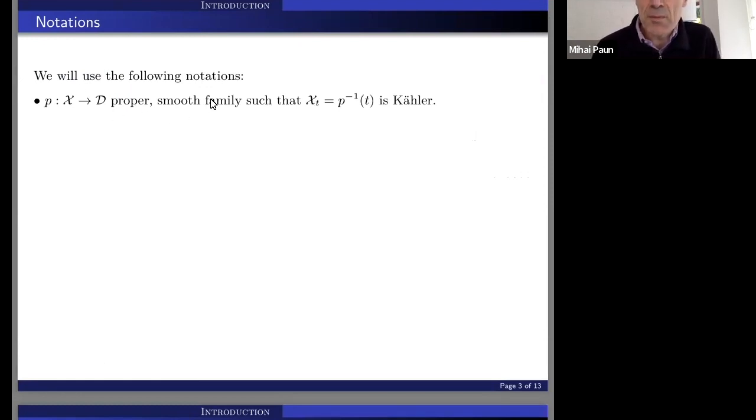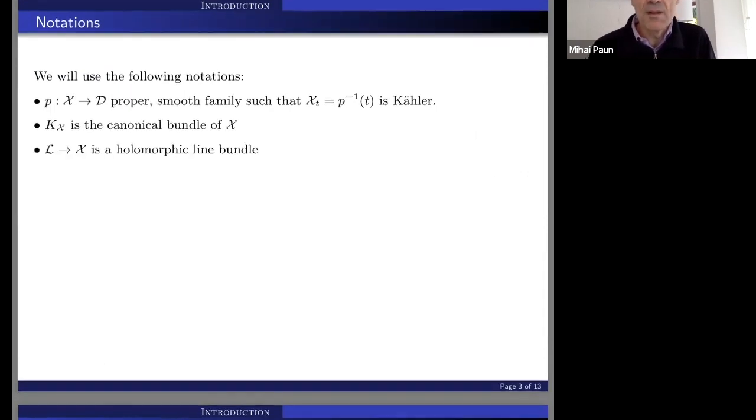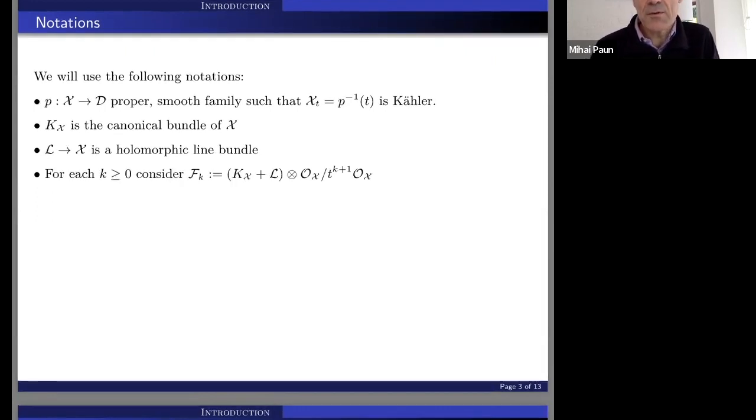We have here a proper smooth family such that all the fibers are Kähler, and as usual we note K_X here, the canonical boundary of the global family. And then let's assume that we have a line boundary on the total space on X, and for each positive k, we consider this sheaf, K_X plus L twisted with this. The sections of this sheaf are holomorphic sections modulo t to the power k plus one. It's d-bar zero, but it's a multiple of these t to the power k plus one presented in a bit down to earth terms.